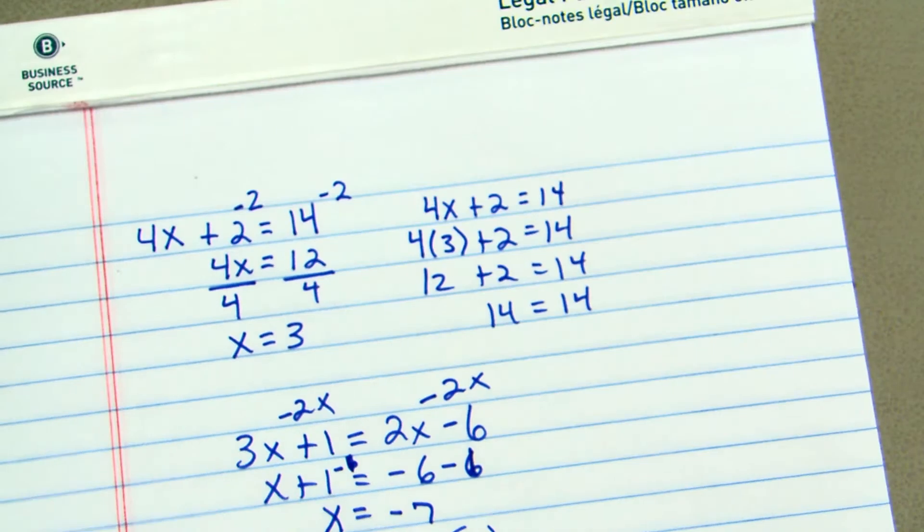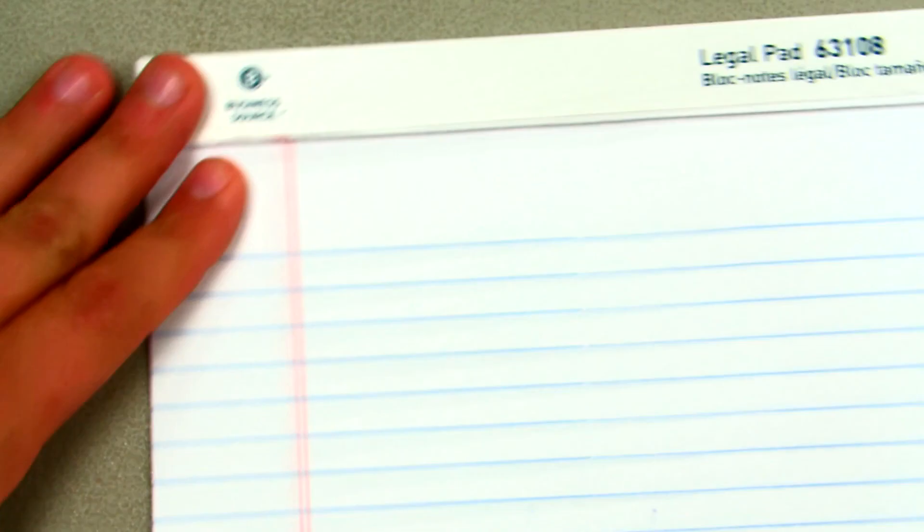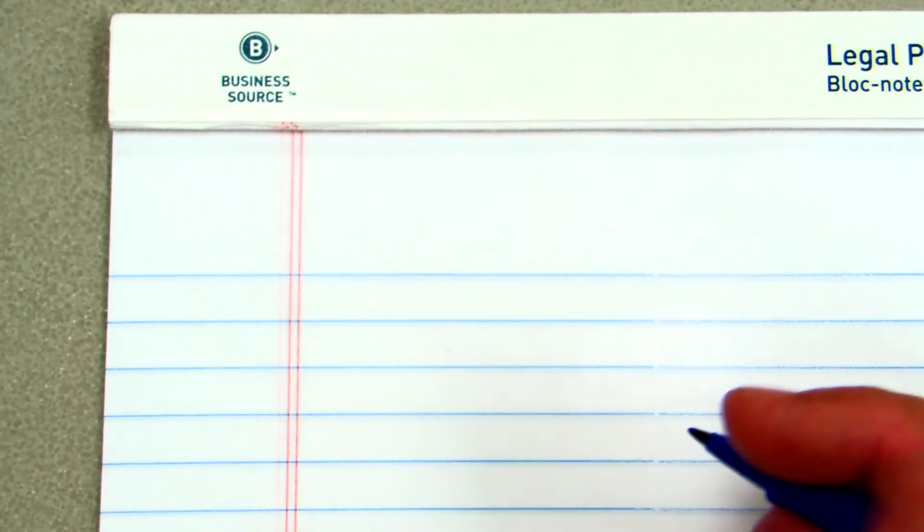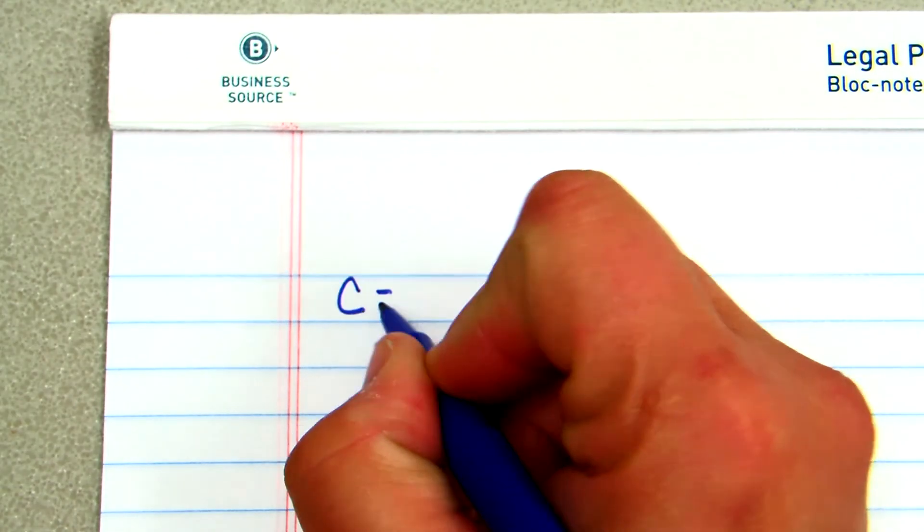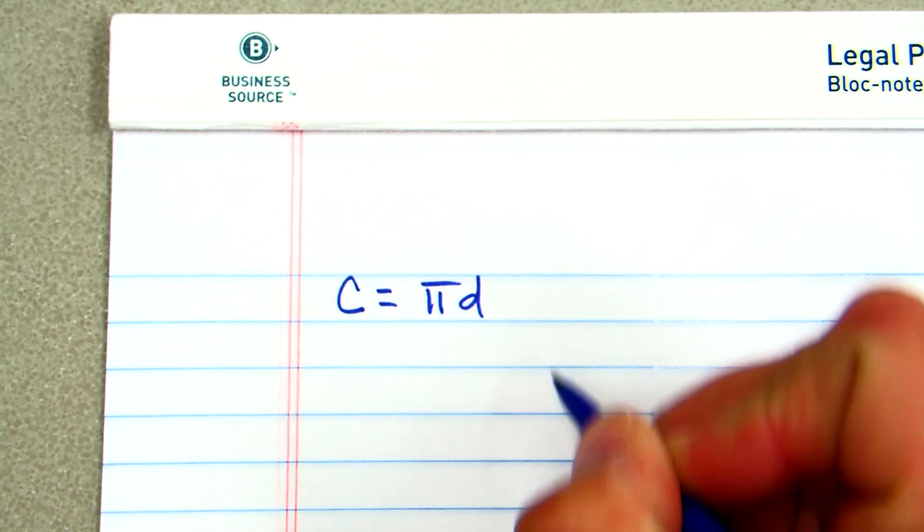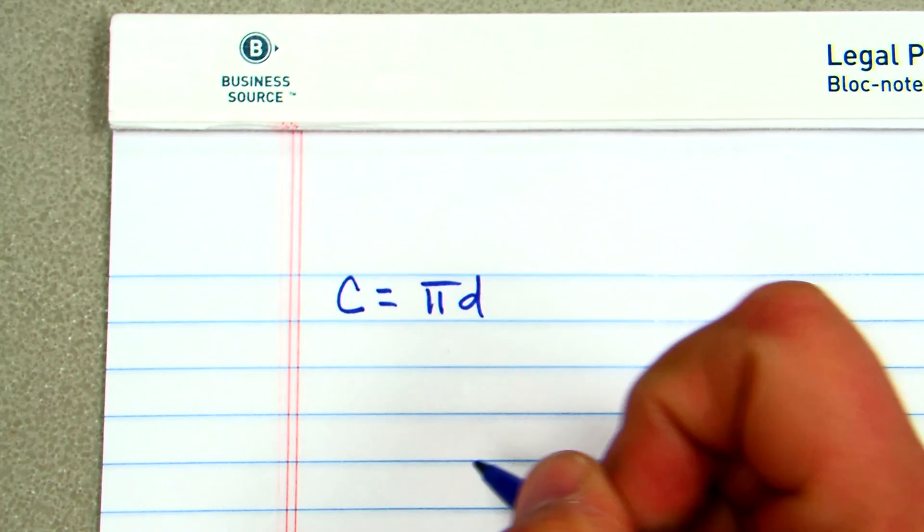All right, now, the second part of the chapter, beyond solving equations that we had to learn to do, was to find the circumference of a circle. Now, the formula that we used, or familiar with, was c equals pi d. Pi is the equivalent of 3.14.